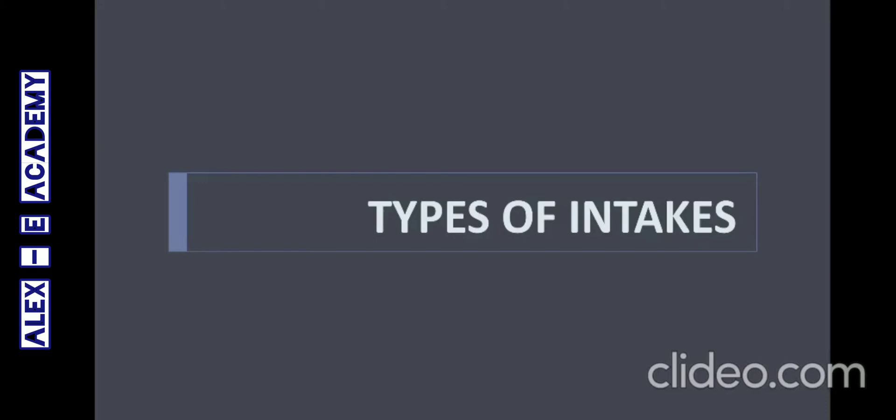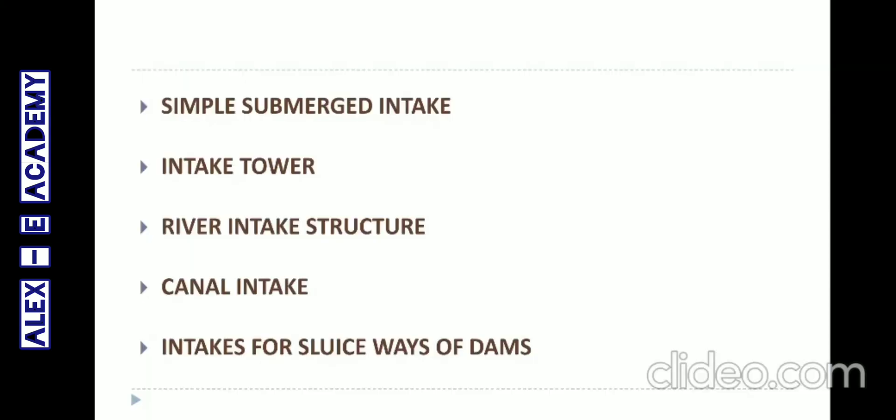As per the syllabus, here are five major headings for types of intakes: Simple Submerged Intake, Intake Tower, River Intake Structure, Canal Intake, and finally Intakes for Slopes of Dams. The last category has three sub-divisions.